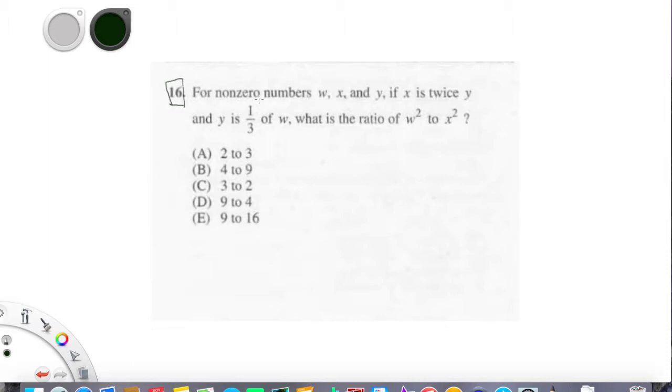Let's read it. So, for non-zero numbers w, x, and y, if x is twice y and y is one-third of w, what is the ratio of w squared to x squared?